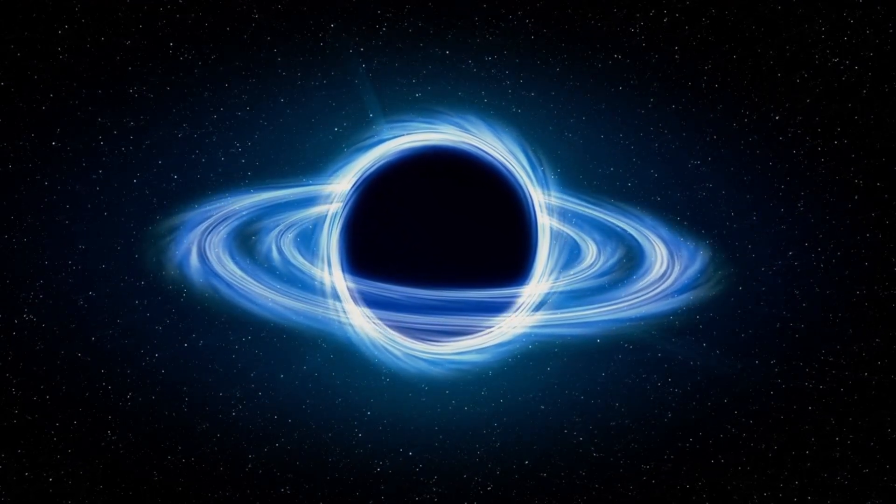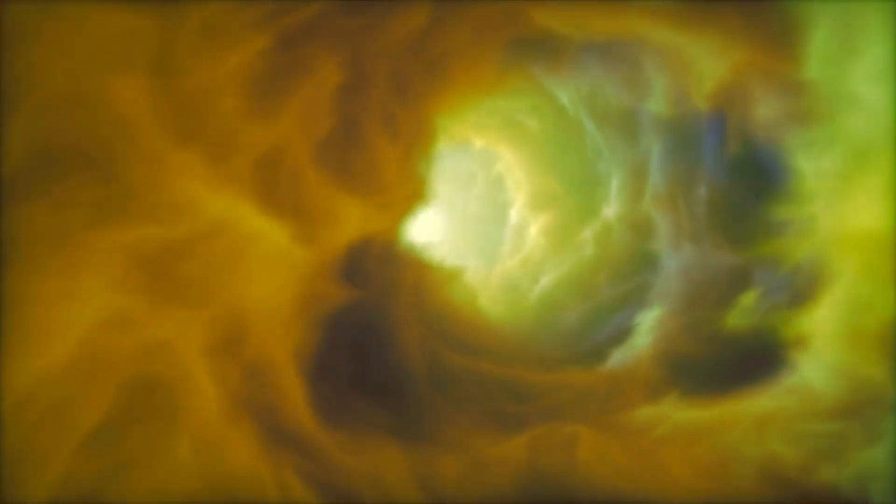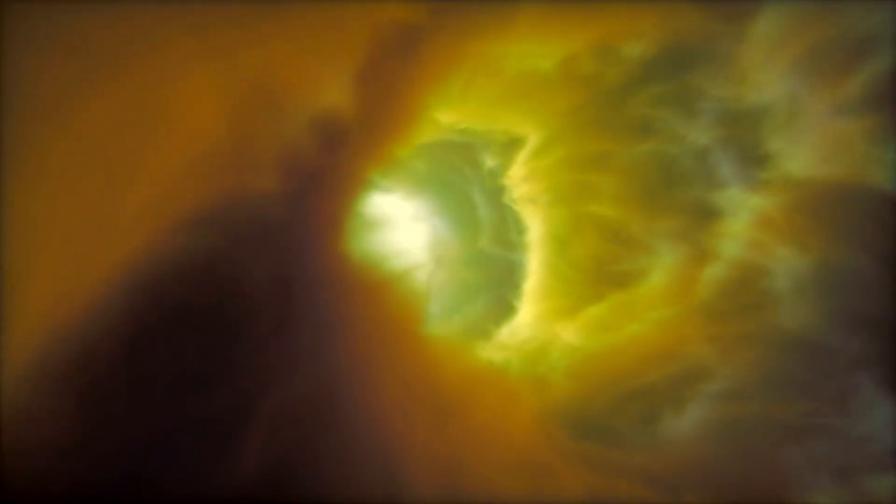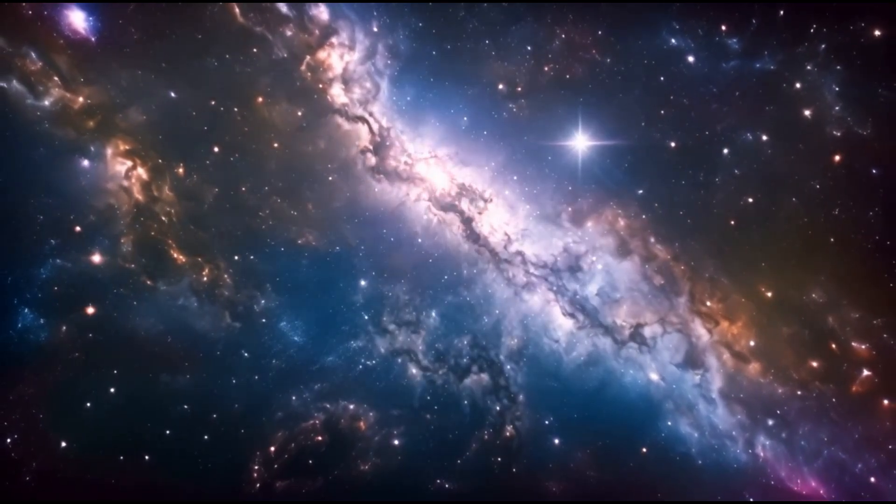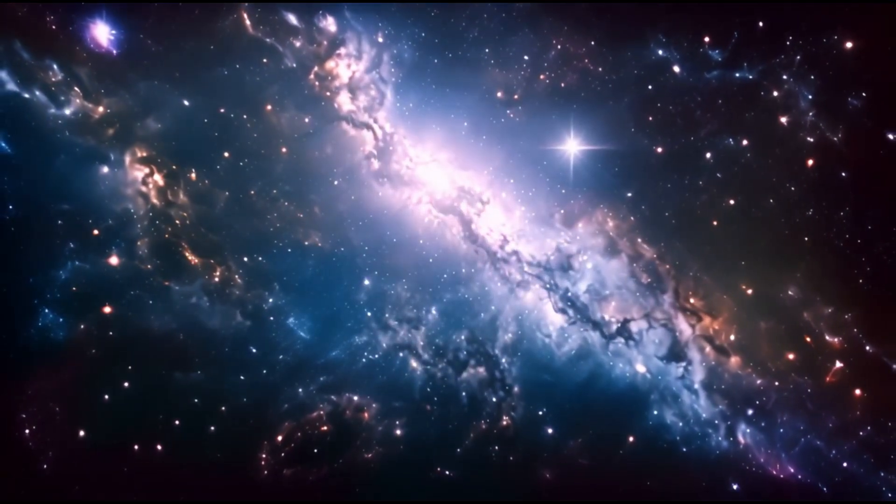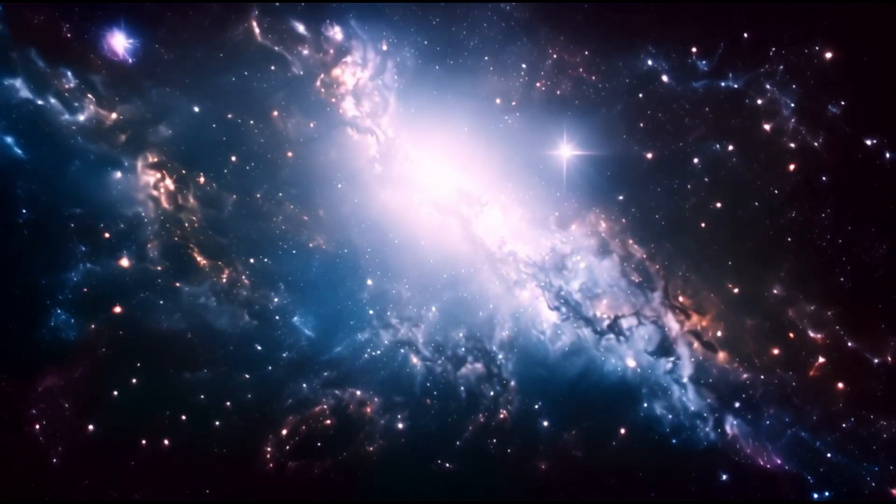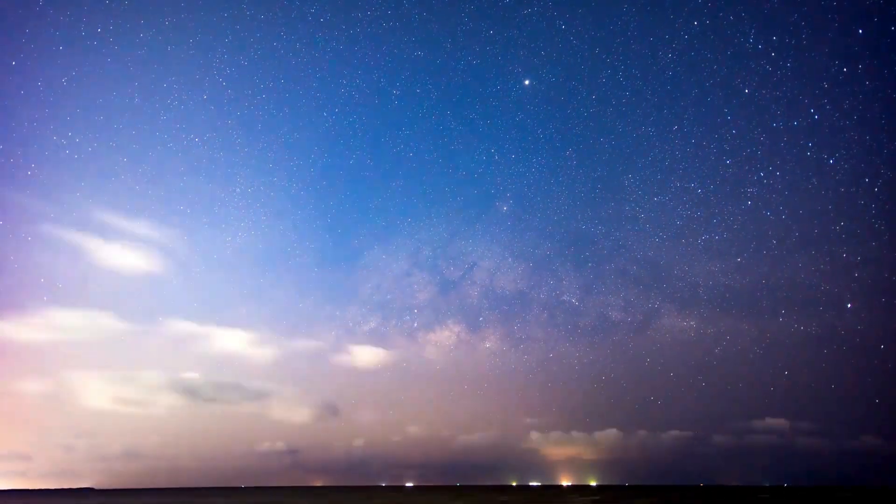As these massive stars break down, something unusual happens near their surfaces. Time itself begins to play tricks. From the perspective of someone far away, time appears to slow down near the event horizon, the final defining point for anything falling into a black hole. The clock ticks at a different speed compared to ours.